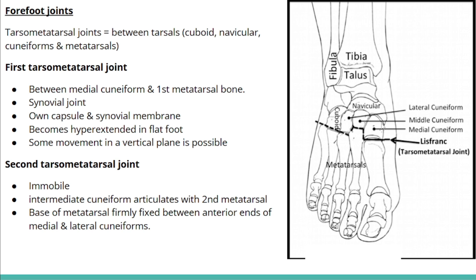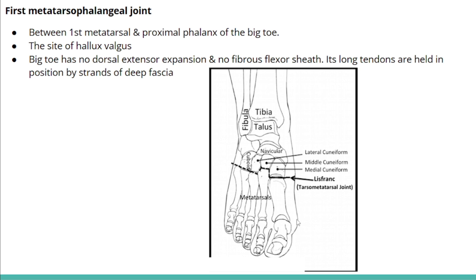Forefoot joints are the tarsometatarsal joints between the tarsal bones — cuboid, navicular, and cuneiforms — and the metatarsals. The first tarsometatarsal joint, between the medial cuneiform and the first metatarsal, is synovial with its own capsule; it can become hyperextended in flat foot. The second tarsometatarsal joint, between the intermediate cuneiform and the second metatarsal, is immobile because the base of the second metatarsal is firmly fixed between the medial and lateral cuneiforms.